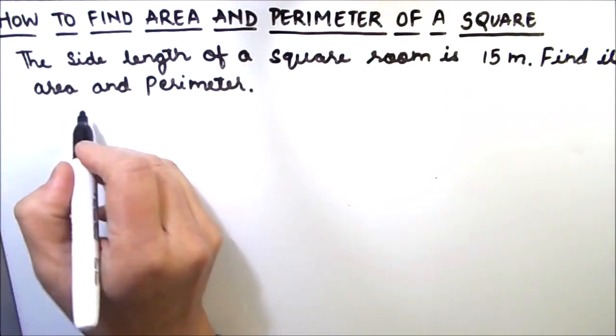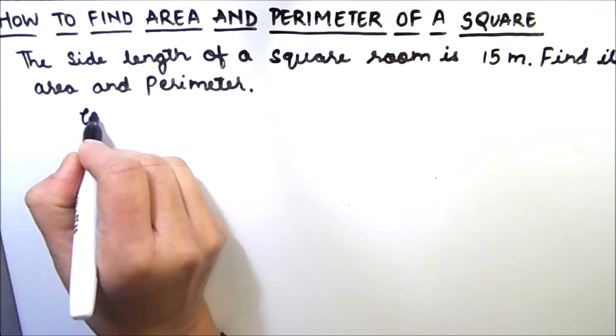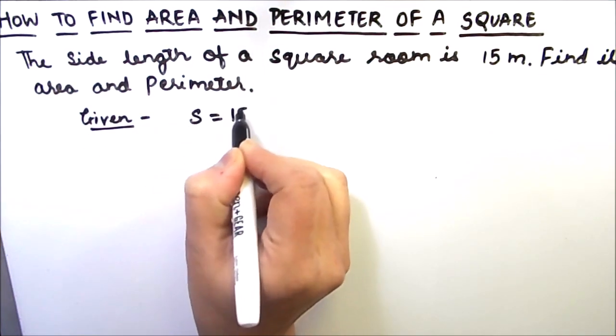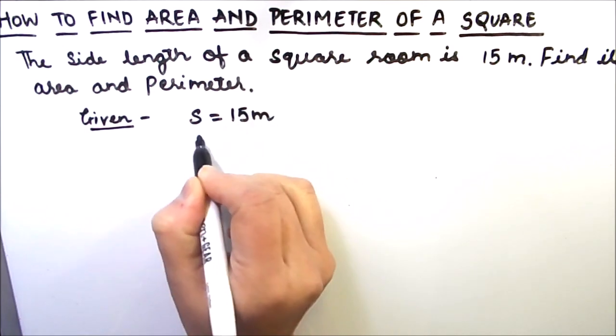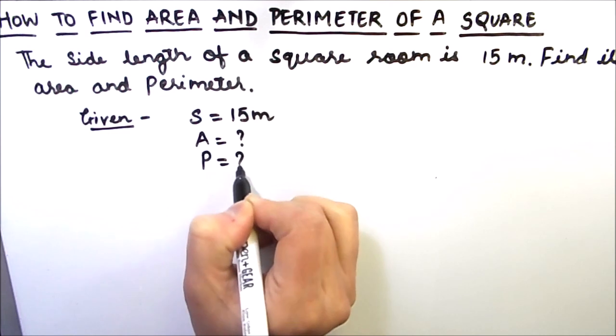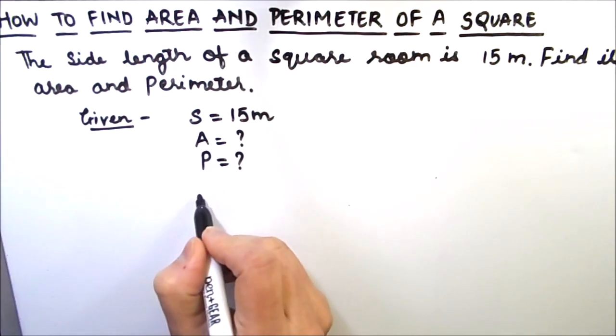So first of all we will write what is given in the question. So given is side length of 15 meter. And we need to find the area and perimeter of the square room. So for finding the area,